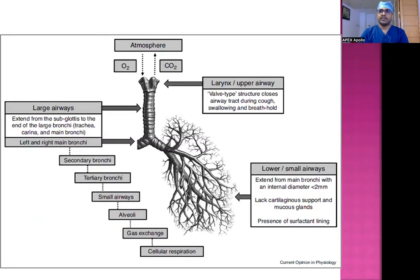Initially, we'll deal with the normal anatomy, and then we'll look into how the airway looks in sonoanatomy. The airway can be divided into upper airway, which comprises the nasal airways and nasopharynx, and the structure of importance in sonoanatomy is the larynx. Then comes the larger airways — the trachea, which bifurcates into the left and right main bronchus.